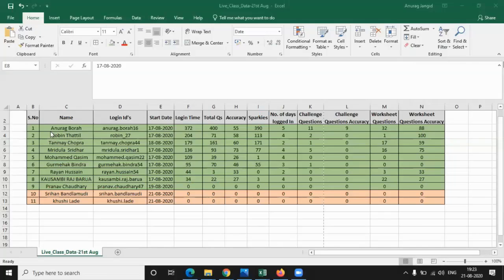So Anurag Bhora has actually used it for 372 minutes. He has solved within these from 17th till 21st, within four days he has solved 400 questions. That means per day he is solving close to 100 questions. His accuracy rate is 55% and he has attained 390 sparky.